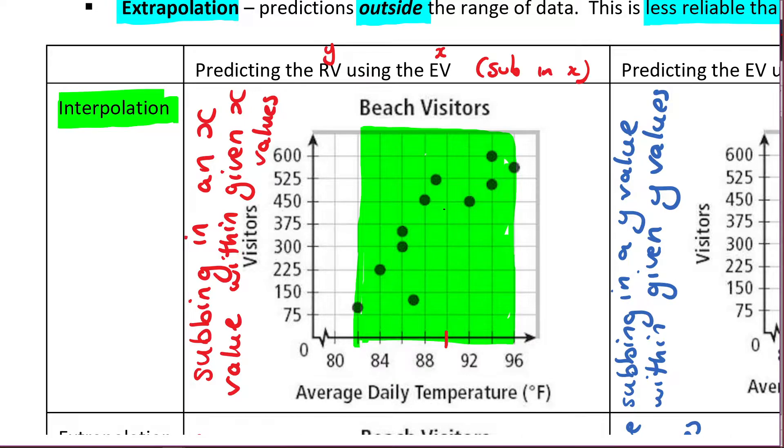So what you'd be thinking in your head is, well, you know, my regression line would probably be about here. So that means if the average daily temperature was about 90, we don't know for sure, but I would predict that it's going to be that many visitors right there. So as you can see, there is no actual data point for 90. That's why we're predicting. And it's interpolation because we're within the given x values there.